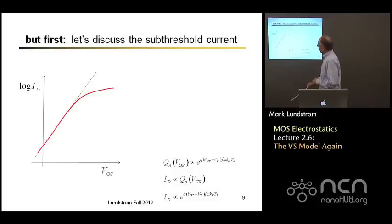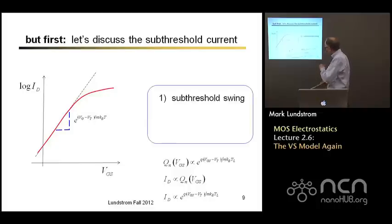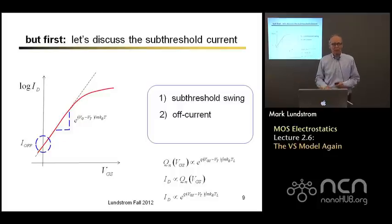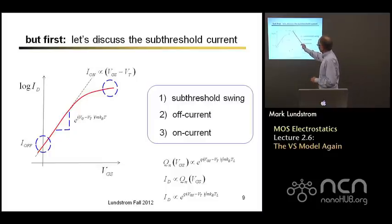So our IV characteristics, our transfer characteristics, will look like this. Now one of the key parameters that we have in a MOSFET is its sub-threshold swing. And this is directly related to this exponential dependence of the sub-threshold current on the gate voltage. So since the charge in sub-threshold conditions goes exponentially with gate voltage, the current will go exponentially with gate voltage. When I apply zero volts, I'll still get a finite current. That's what we've called our off-current or our leakage current. And above threshold, the current will go linearly with gate voltage.